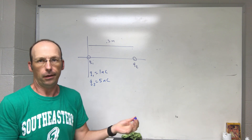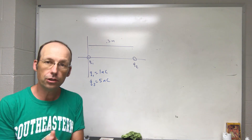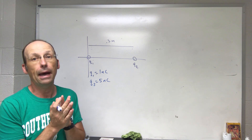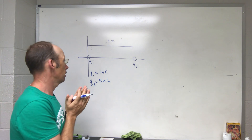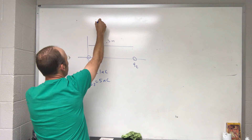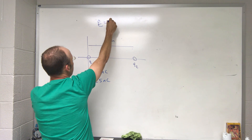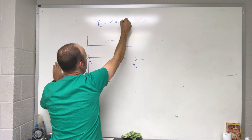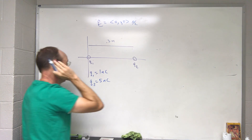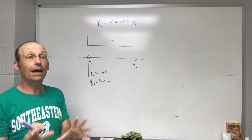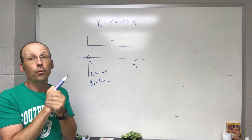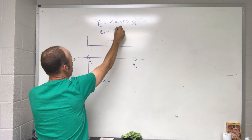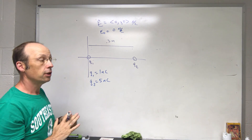There's nothing complicated yet. The question is: where is the electric field zero? Technically it would be the total electric field equal to the vector zero, but we're going to constrain this to the x-axis — so where is the x-component of the electric field zero?